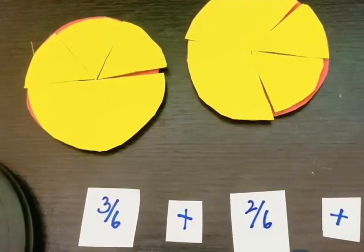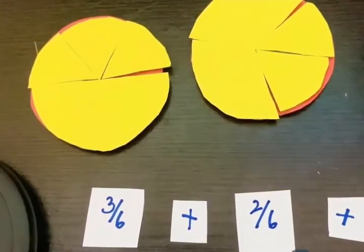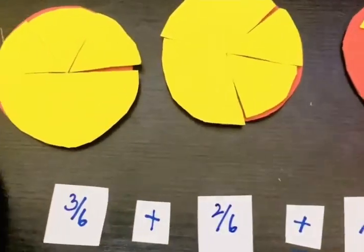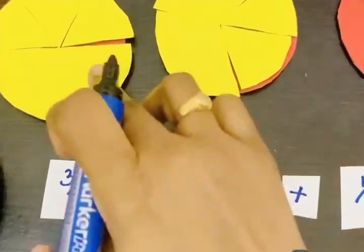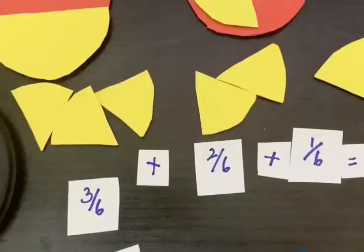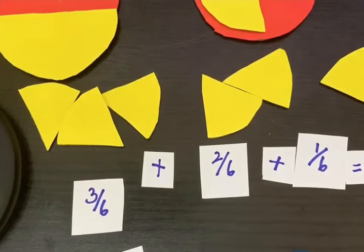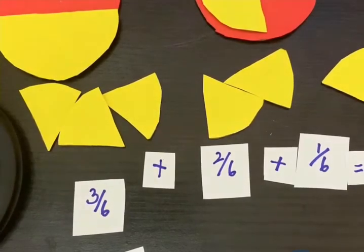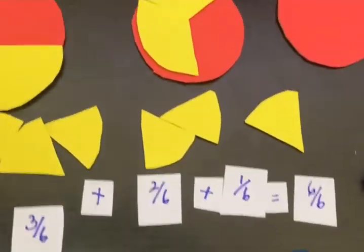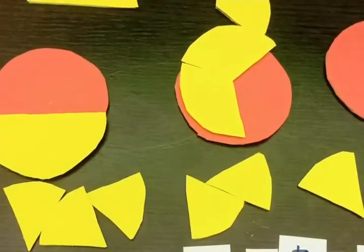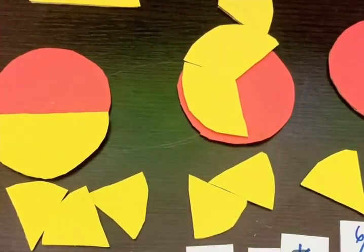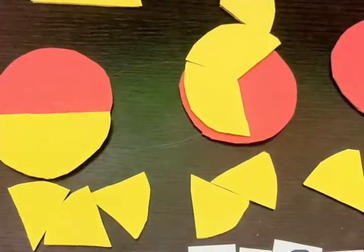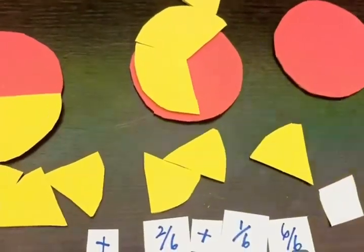Now we can add the numerator numbers: 3 plus 2 plus 1, which equals 6. So the answer is 6 by 6. If we cancel out 6 by 6, we can get the answer as 1.